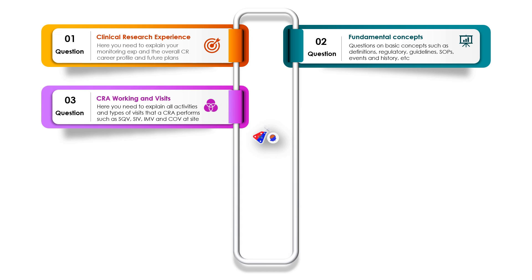The next kind of question they will ask is regarding CRA working and visits — what type of visits have you faced or conducted? What do you know about an SIV, a site qualification visit, or a COV such as a quality closeout visit? They may ask: if they plan a closeout visit, what is your preparation strategy? What documents will you ask the site for? What documents are expected from you? Which documents should be submitted during a closeout? Read about these visits carefully, as every minute detail is looked at by the interviewer.